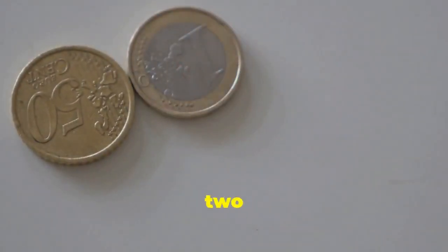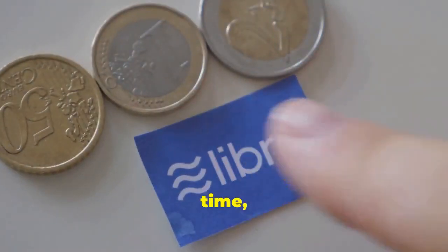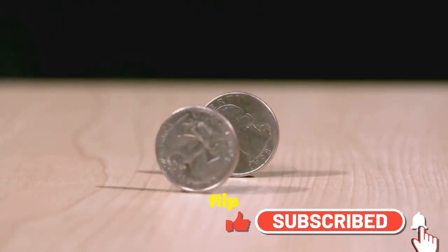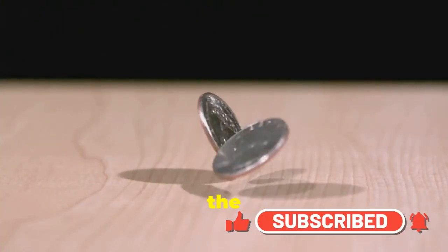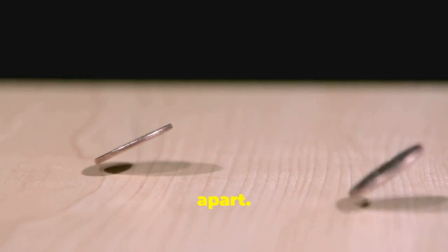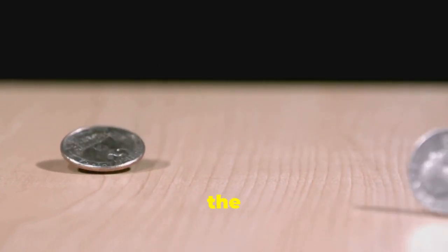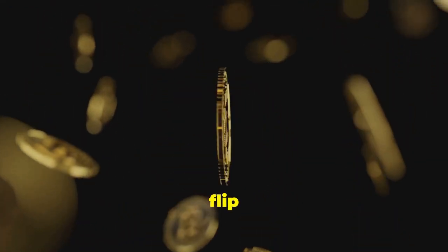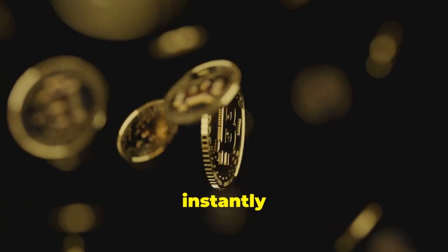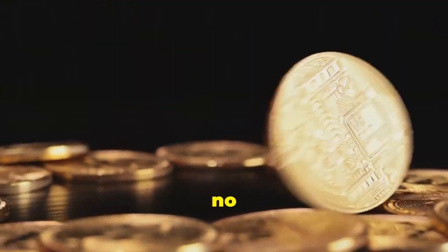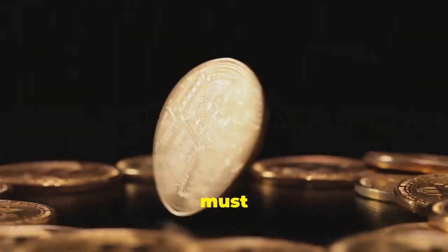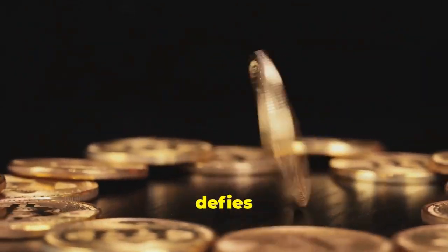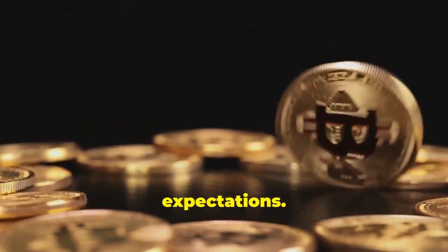It's like having two coins flipped at the same time, but instead of getting heads or tails randomly, the outcome of one flip instantly determines the outcome of the other, even if the coins are light years apart. This analogy helps us grasp the bizarre nature of quantum entanglement. This means that if you flip one coin and get heads, you instantly know that the other coin, no matter how far away it is, must have landed on tails. This instantaneous determination defies our everyday experiences and expectations.